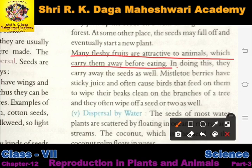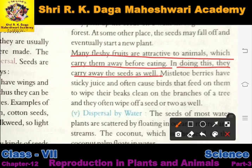Many fleshy fruits are attractive to animals, which carry them away before eating. Bahut saare fleshy fruits bahut attractive hote hain aur jo animals hain woh unhe consume kar lete hain. In doing this they carry away the seeds as well — jab woh fruit ko todte hain to fruit todne ke saath saath woh seed ko bhi ek jagah se dusri jagah le jate hain.